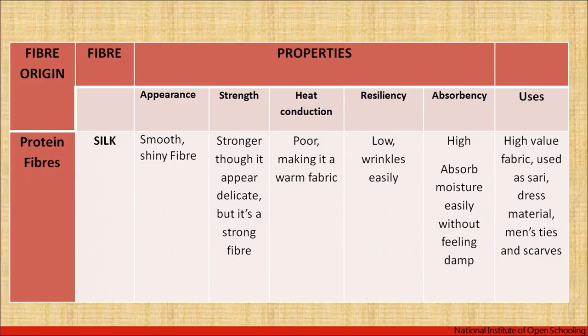Next we have the protein fiber — silk. Silk is the only filament fiber available naturally in the environment and is called the queen of fiber because it's shiny, lustrous, smooth, and has good strength. For example, a silk saree is very expensive and often requires dry cleaning rather than home washing. The appearance of silk fabric is smooth and shiny. Though it appears delicate, silk is a strong fiber compared to cotton and others.